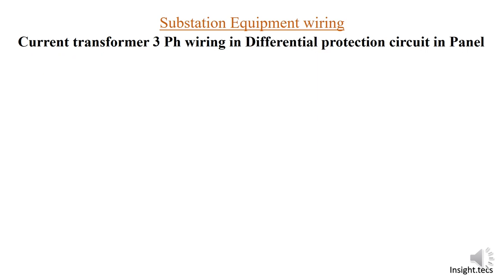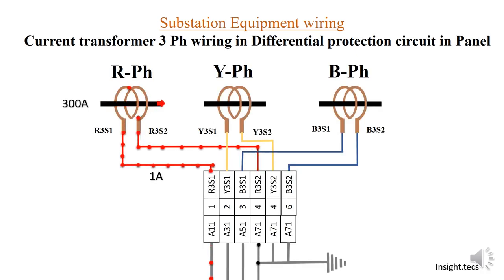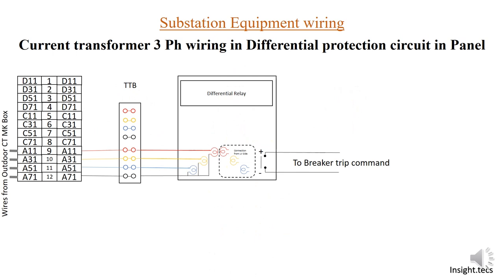Now let us move on to the differential protection wiring inside the panel. For differential protection, the core being used is r3s1, r3s2, and similarly for Y and B phases. The four wires coming out are a11, a31, a51, and a71. Once these four wires reach the panel, similar to the previous wiring, they pass through test terminal blocks and reach the differential relay. In the differential relay, there is also a connection from the LV side, where the current equivalent to the LV side is already flowing.